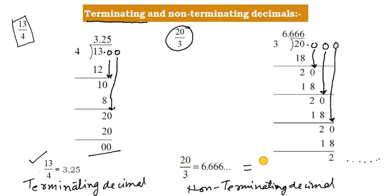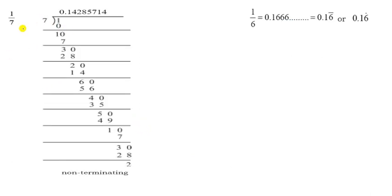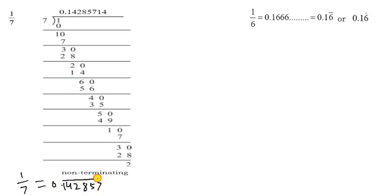It is a Non-Terminating Decimal. We can represent it as 6.6 bar or 6.6 with a dot over 6. Now let's see 1 by 7. Dividing, we get 0.142857, which is also Non-Terminating. So 1 upon 7 is written as 0.142857 bar.